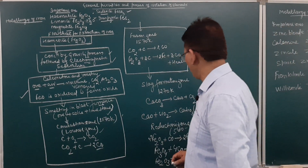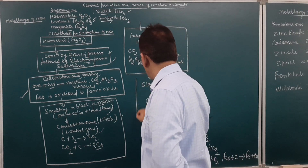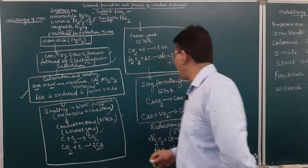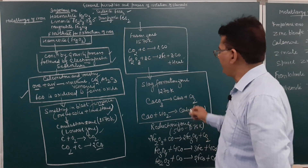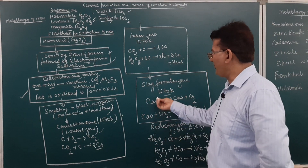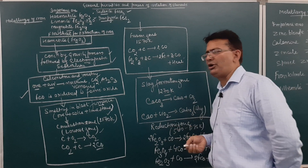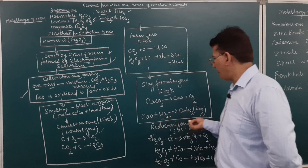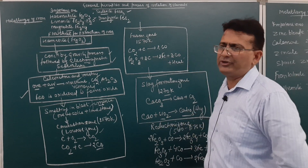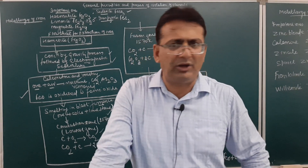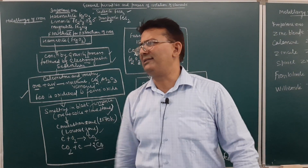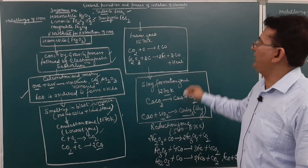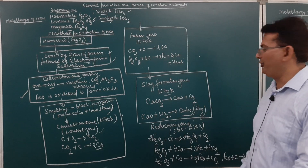Then we have the slag formation zone. Here, at a temperature of 1270 K, calcium carbonate converts into calcium oxide and CO₂. This calcium oxide reacts with silicon dioxide and is removed as slag, which is calcium silicate. The slag in iron extraction is calcium silicate.